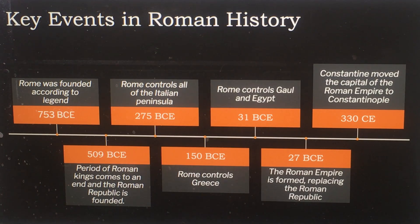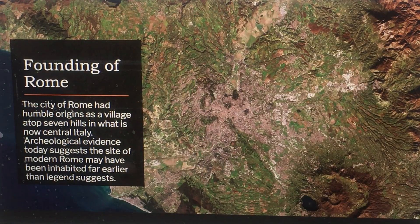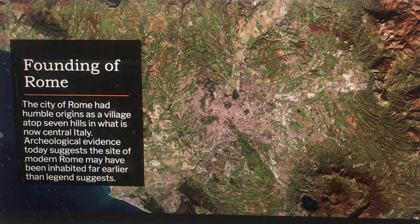In 330 CE, Constantine moved the capital of the Roman Empire to Constantinople, the city named after him. The founding of Rome was quite interesting, as the city had humble origins as a village atop seven hills in what is now central Italy. Archaeological evidence suggests the site of modern Rome may have been inhabited far earlier than legend suggests.